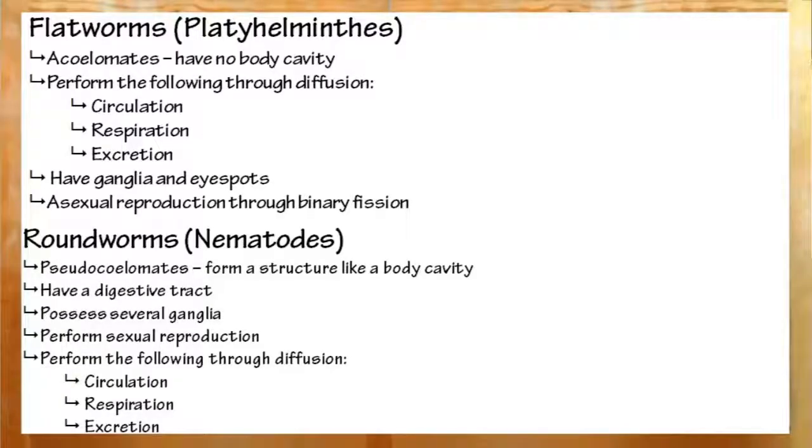Next up, roundworms, nematodes. These are pseudocoelomates. That means they have like a body cavity, but not quite so highly developed. They do have a digestive tract. They have a mouth and an anus.